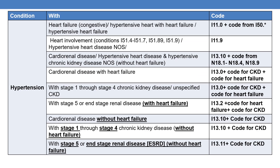Here is the tabular list with the condition and respective code. For hypertension with heart failure, hypertensive heart with heart failure, or hypertensive heart failure: code I-11.0 plus a code from the I-50 subcategory to indicate the type of heart failure. For hypertension with heart involvement conditions categorized under I-51.4 to I-51.7, I-51.89, or I-51.9 — or if the physician documents hypertensive heart disease NOS — the code is I-11.9. With heart failure it is I-11.0, with additional I-50 category coding. For hypertensive heart disease without heart failure and other related conditions, the code is also I-11.9.